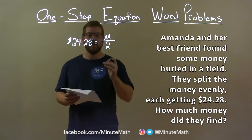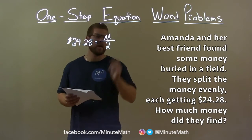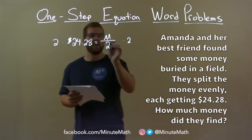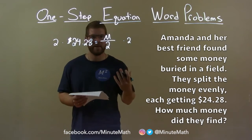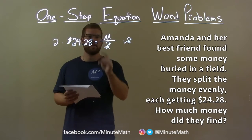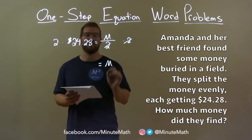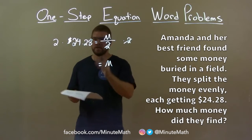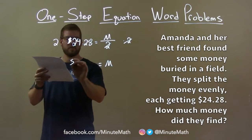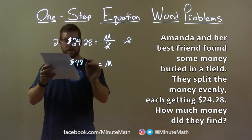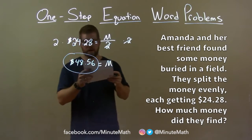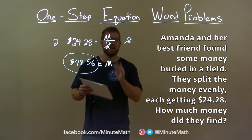Let's solve for M, the total amount. We multiply both sides by 2 — opposite of division is multiplication. That eliminates the 2 on the right, giving M by itself. 2 times $24.28 is $48.56, and that is our final answer — the total money they found buried in the field.